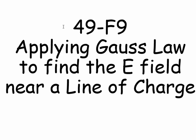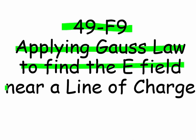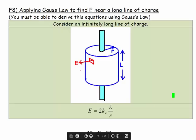Welcome. This is 49F9, and we're going to apply Gauss's law to find the electric field near a line of charge. So this is a very different geometry than what we've been dealing with. Here's a diagram showing the geometry. We have a line of charge in the middle. We're going to say an infinite line of charge so that we don't have to worry about the ends. Our point of interest is somewhere on the side.